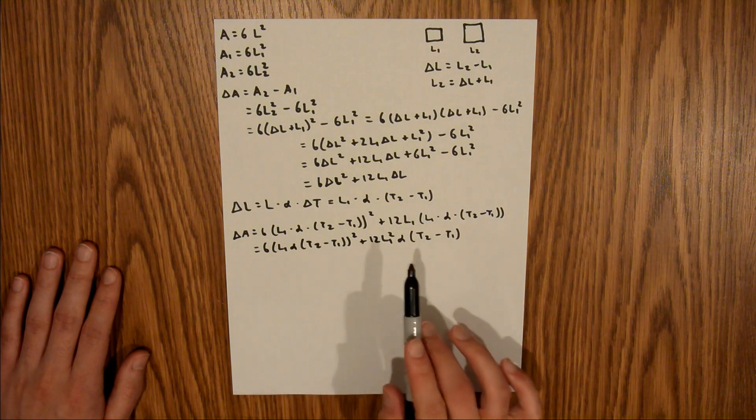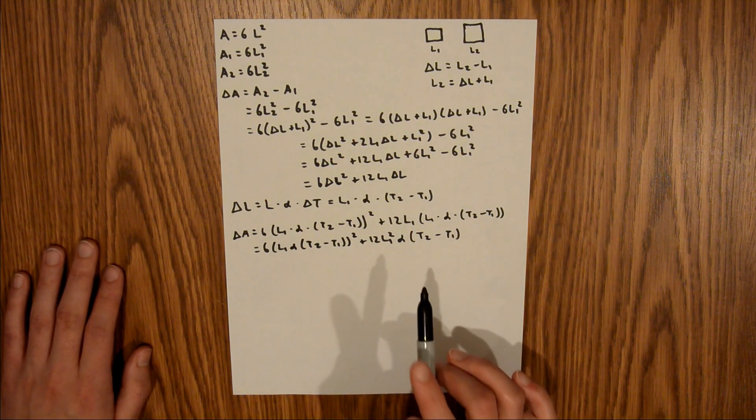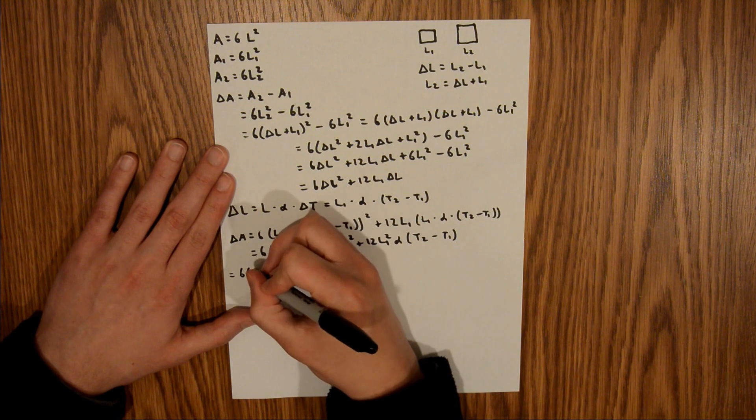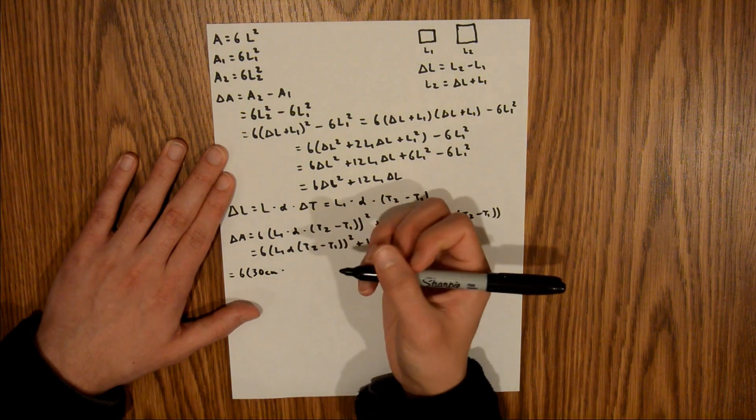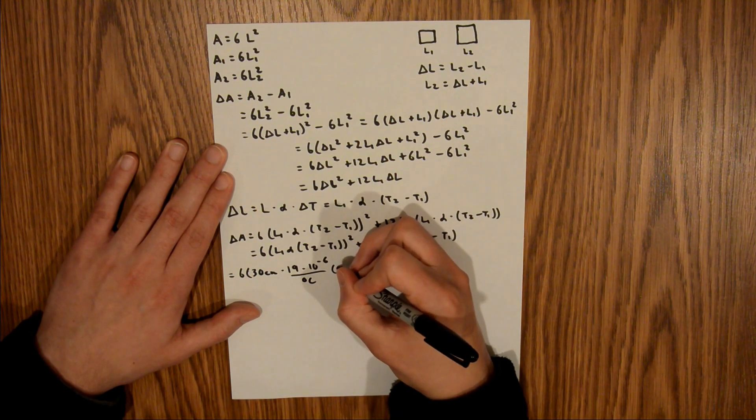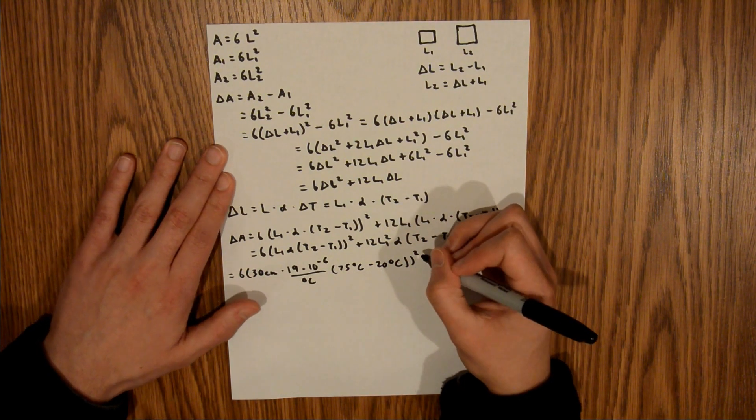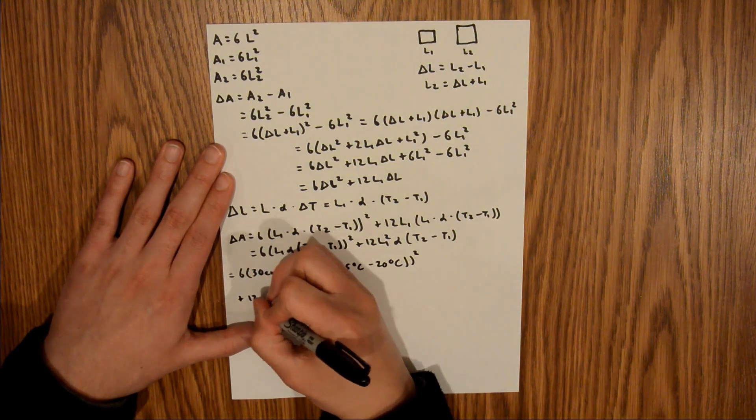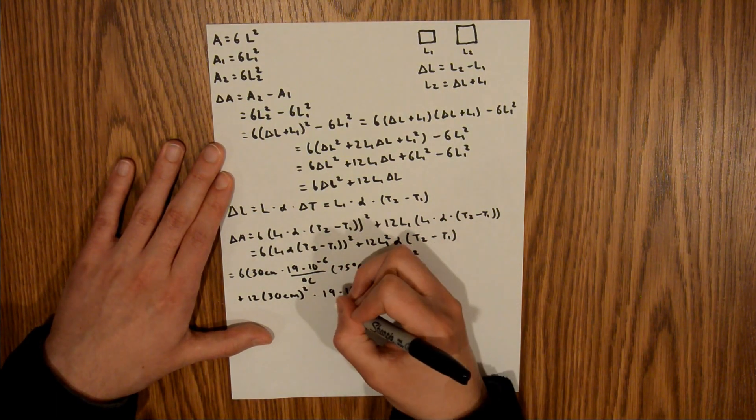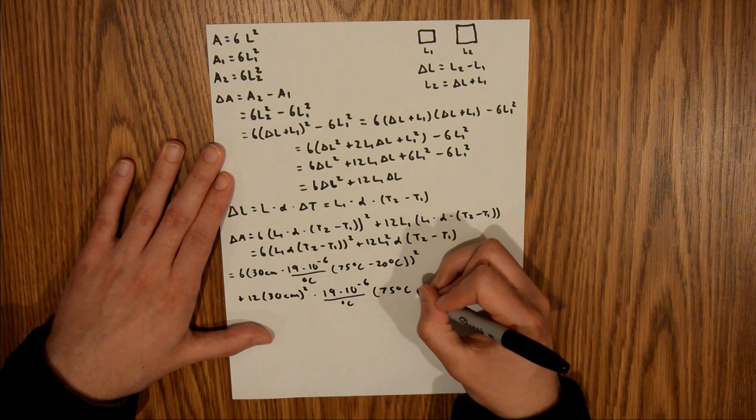We are given all these values in the problem except for alpha. Alpha is the coefficient of linear expansion, which is a function of the material. The material given in this problem is brass, and you can find alpha for brass in one of the tables in the chapter. This is equal to 6 times 30 centimeters times alpha, which in that table you would find 19 times 10 to the negative 6th per degree C, times 75 degrees C minus 20 degrees C. Those two terms equal 0.0059 centimeters, entire quantity squared, plus 12 times 30 centimeters squared, times that alpha again, 19 times 10 to the negative 6th per degree C, times our temperature difference again, 75 degrees C minus 20 degrees C.